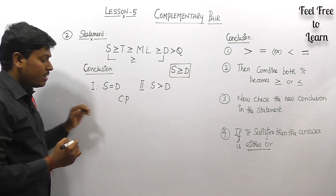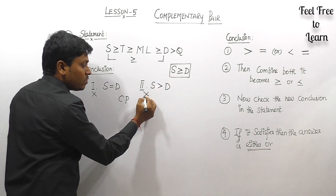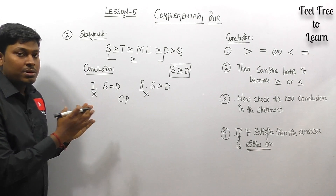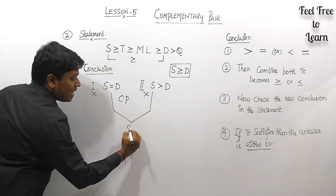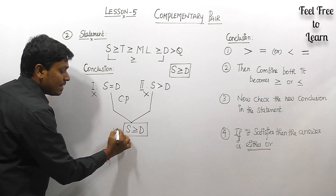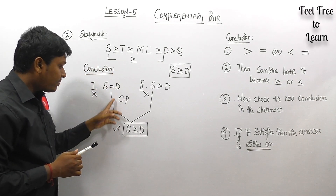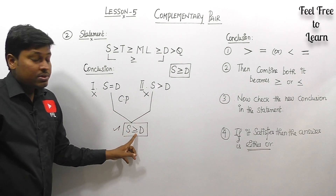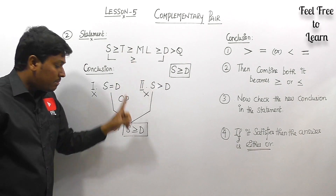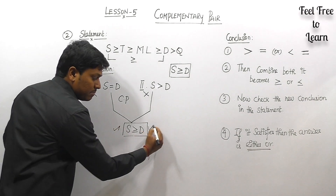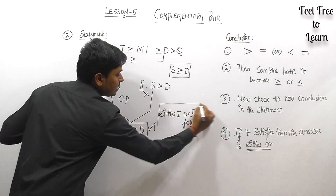Conclusion two says S > D, but comparing S and D gives S ≥ D, not just greater than, so conclusion two is also false. Both conclusions are individually false and it is a complementary pair, so combine them: S > D combined with S = D gives S ≥ D. Checking this new conclusion in the statement: comparing S and D we get S ≥ D, which is true. So the answer is 'either conclusion one or conclusion two follows' — option three, either or.